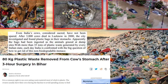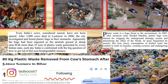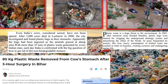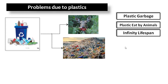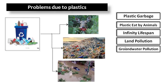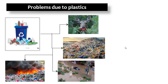Also, plastic waste clogs drains, meaning that during heavy rainstorms it increases the chances of floods. For example, in 2005, Mumbai flooded and the reason found was that plastic bags were clogging the underground drainage system. So many problems happen due to plastic waste, like plastic garbage, plastic eaten by animals, infinity lifespan of plastic waste, land pollution, groundwater pollution, upset of food chains, toxic fumes generated by plastic waste, air pollution, etc.